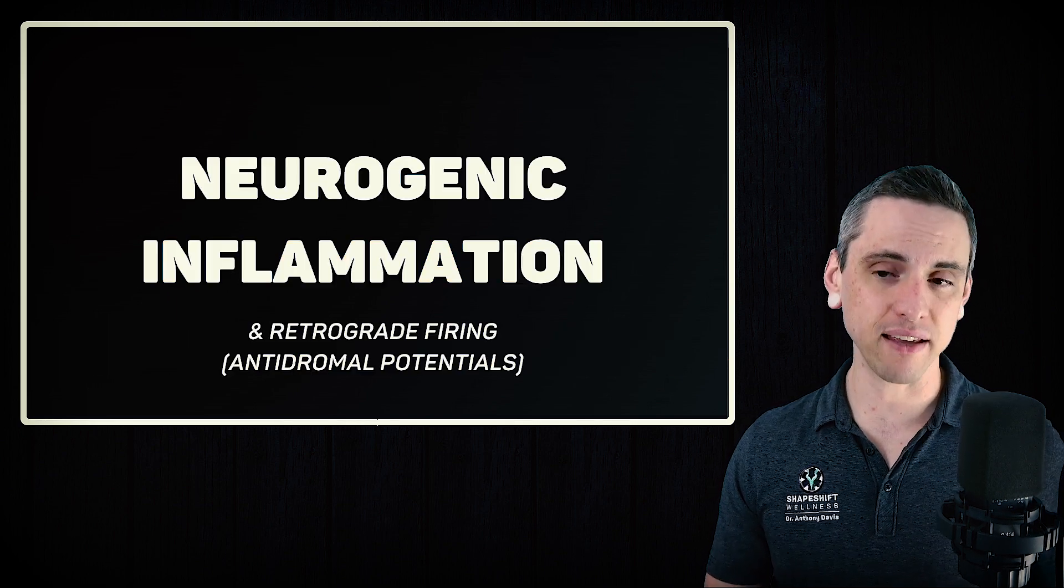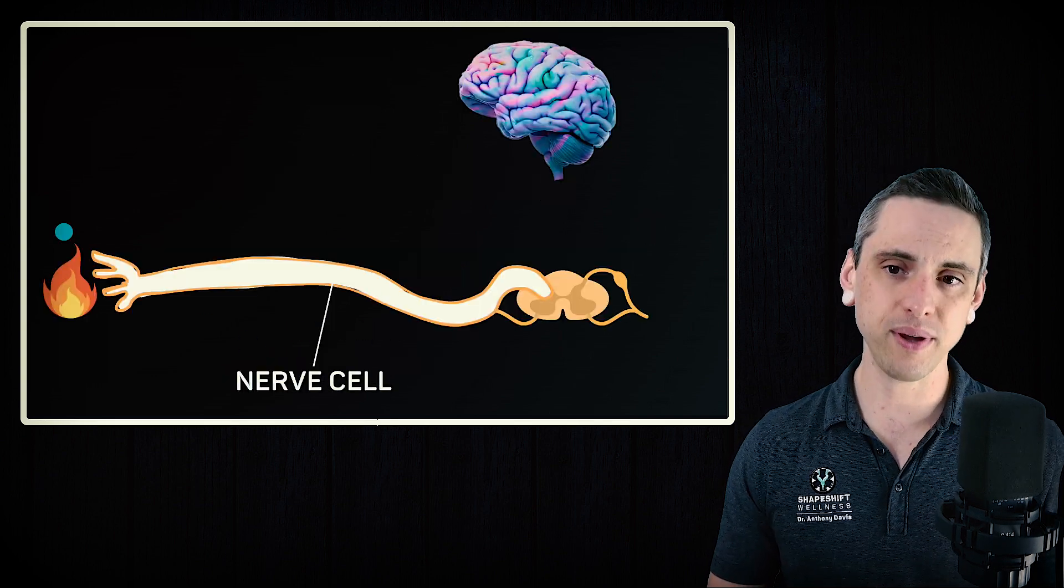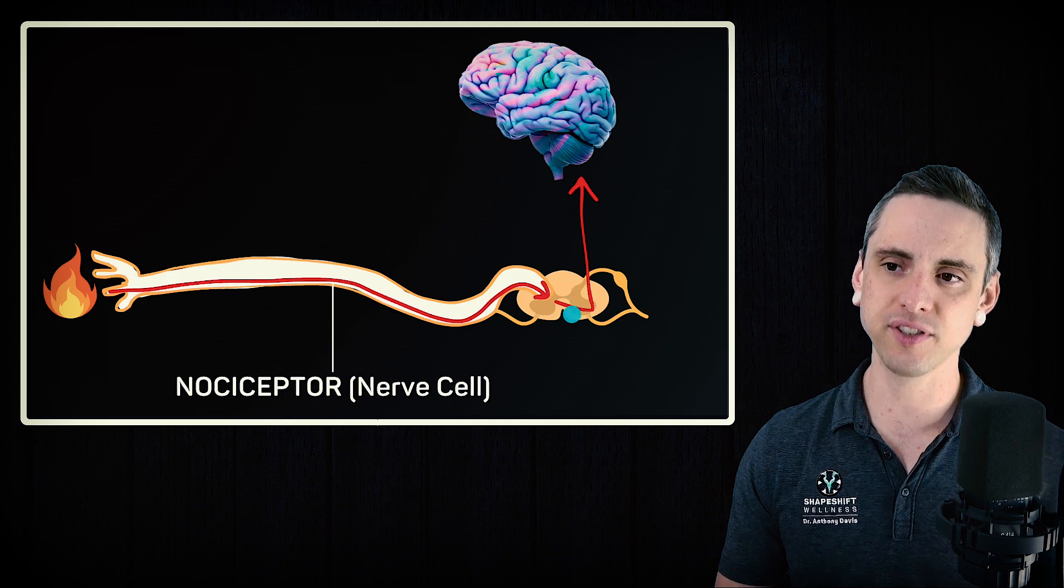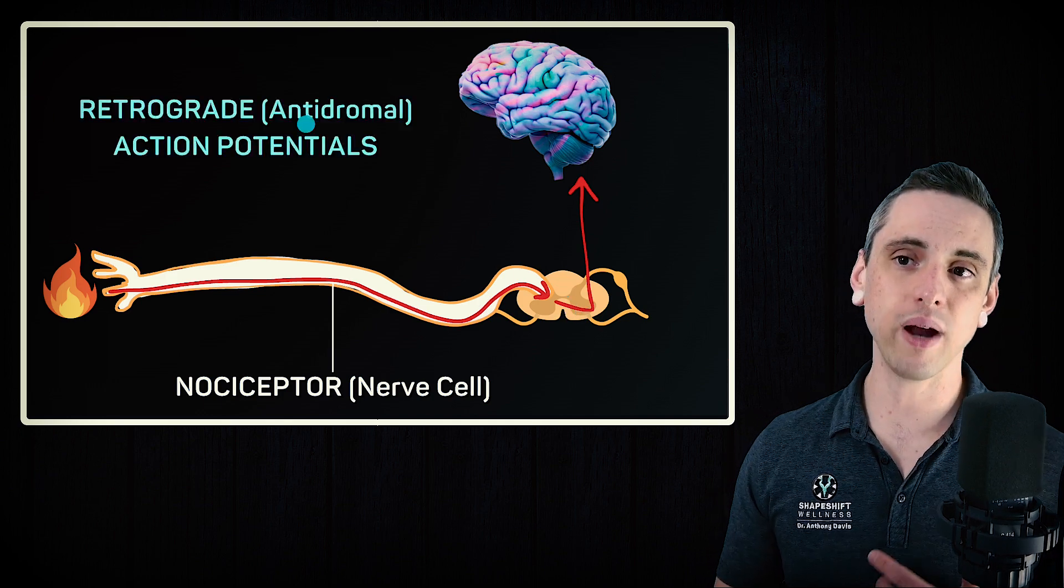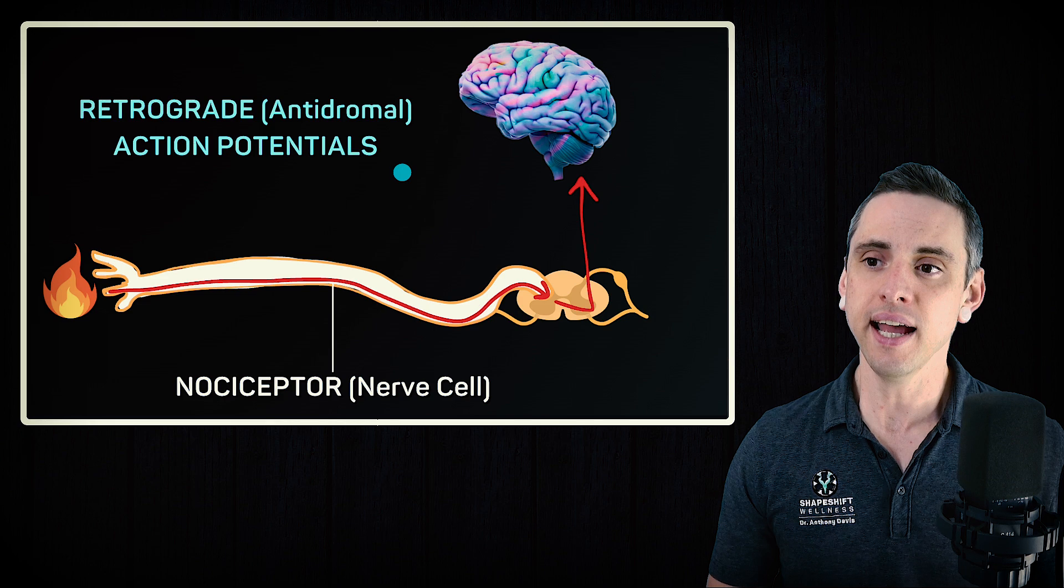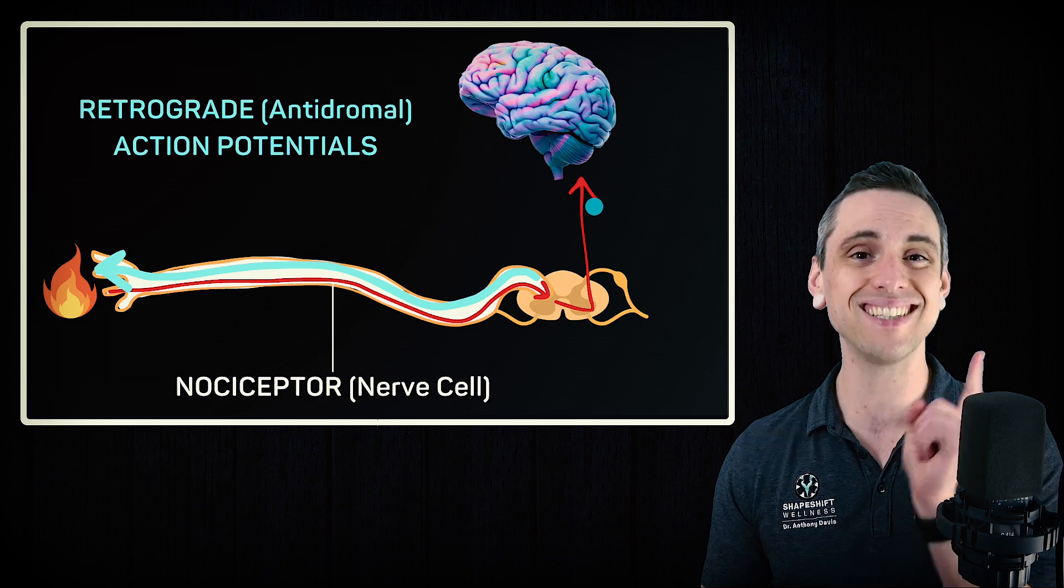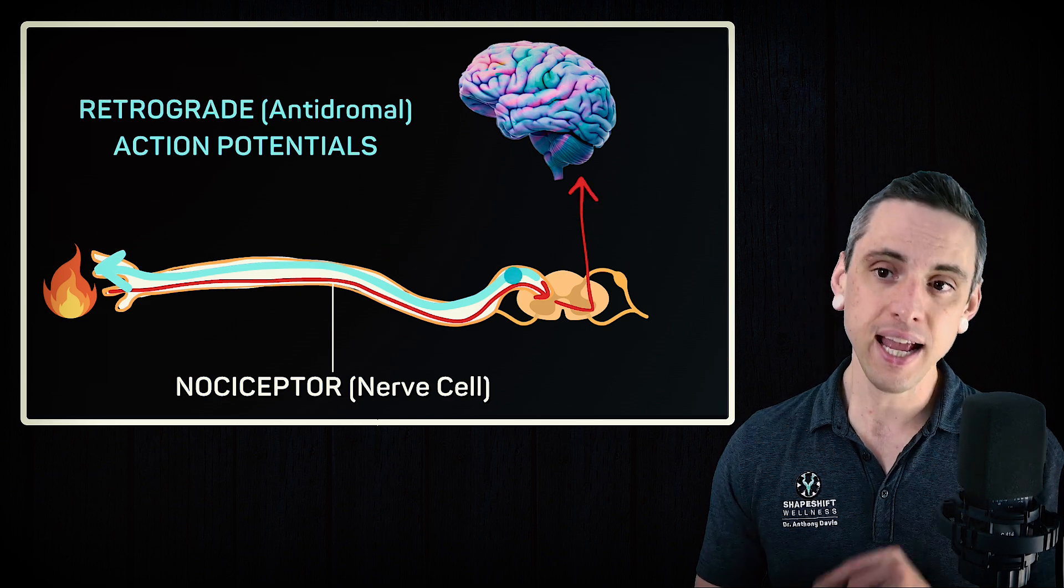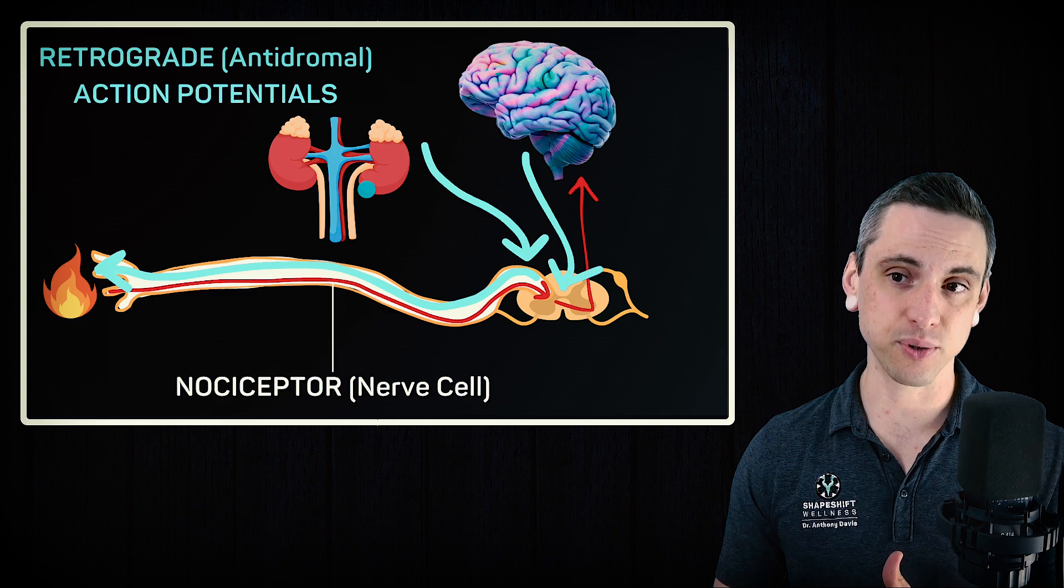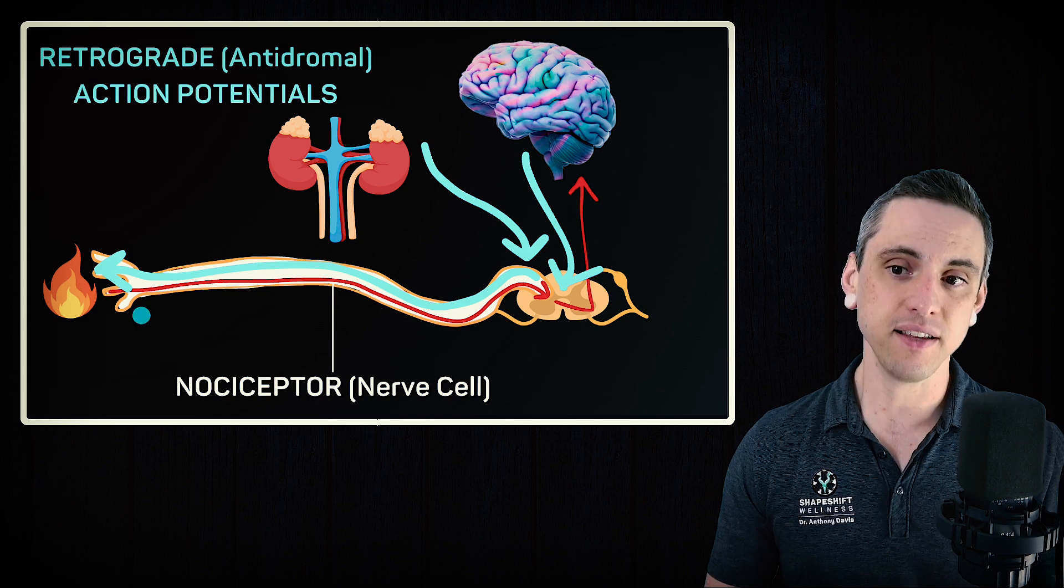The next thing that happens is called neurogenic inflammation, which happens partially as a result of retrograde firing or antidromal potentials. So normally we have a nerve cell, it senses the damage or inflammation, and it's going to send a signal to the spinal cord. And then a new nerve cell is going to send a signal up to the brain. But if we have retrograde or antidromal action potentials, which a lot of people, we don't really talk about this much in our neuroanatomy classes. Even a sensory nerve, this is the part that most people mess up, even a sensory nerve can send signals backwards, and that's called a retrograde or antidromal action potential. We send a signal backwards towards the receptor end. And also, by the way, as a result of stress chemicals, your cortisol, adrenaline, that type of thing, this is also going to feed these antidromal potentials.